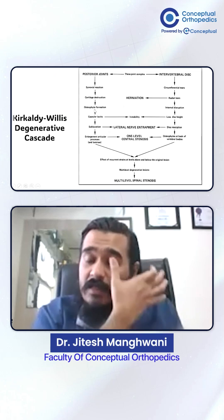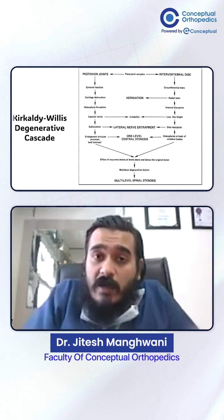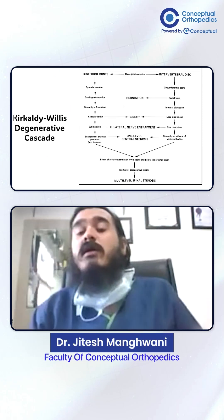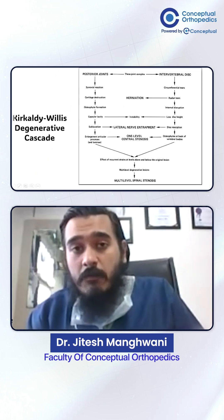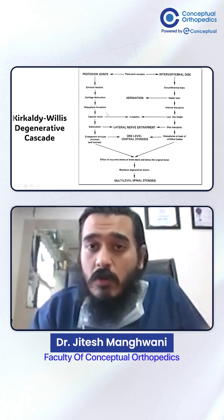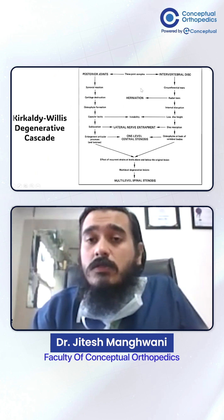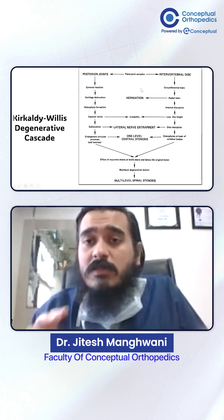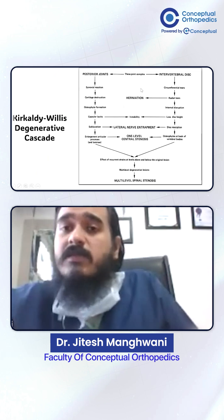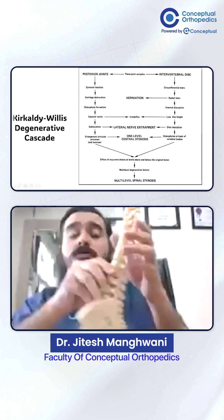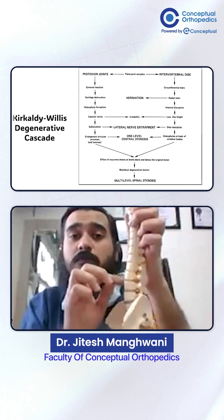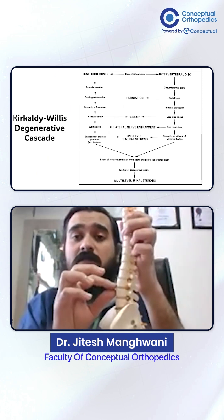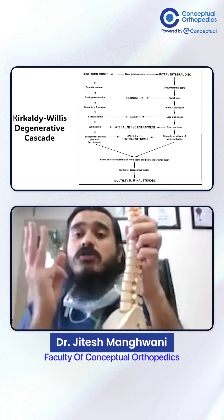The Kirkaldy-Willis cascade is a degenerative cascade that tells us why and how exactly degeneration happens that impacts the spine overall. We consider a segment of the spine — a segment is two vertebral bodies and the disc space. These two vertebral bodies and the disc space in between form the segment, and these are considered to be a three-joint complex.